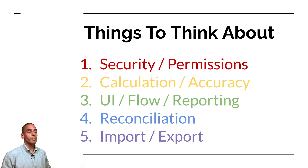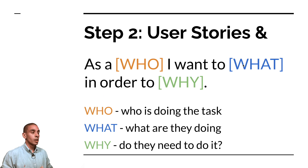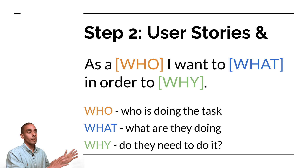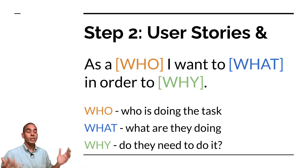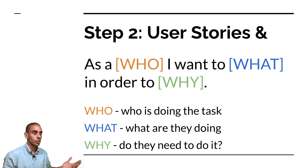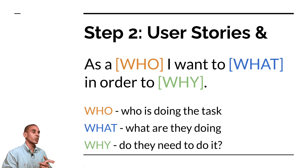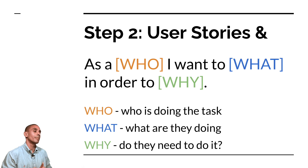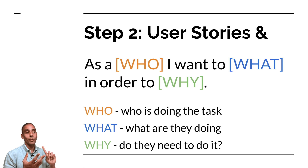This takes us to step two: user stories. In this step, you want to consider user stories as well as the Kanban board. A user story is basically a business requirement but with more context. These tend to work much better than standard business or technical requirements because they give context to what's actually being asked. A user story has three key components: who, what, and why.